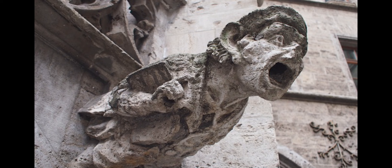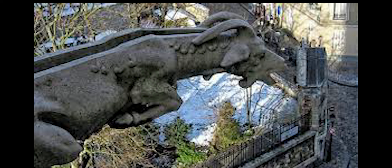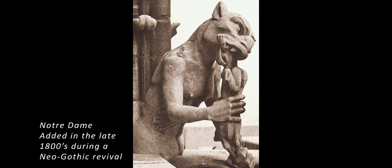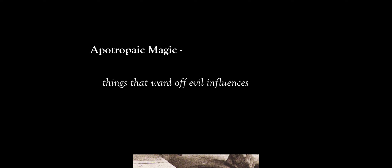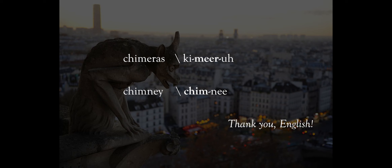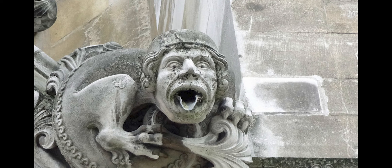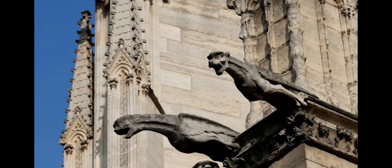Gargoyles decorated the exteriors of Catholic churches as fabulous and frightening monsters. While they served a practical function, removing rainwater from the walls and foundations, they also provided visual messages for the illiterate worshipers. But there has never been one clear interpretation as to what these figures mean. Some view the gargoyles as symbols of the evil and danger that threatened those who did not follow the teachings of the Church. Others believe the gargoyles to be protectors in the tradition of apotropaic magic — devices that ward off evil influences, such as the gorgon's head. Along with grotesques, some depicted chimeras: hybrid creatures of different real or fantastic beasts that embodied what the Church viewed as the bestiality of heathen life.